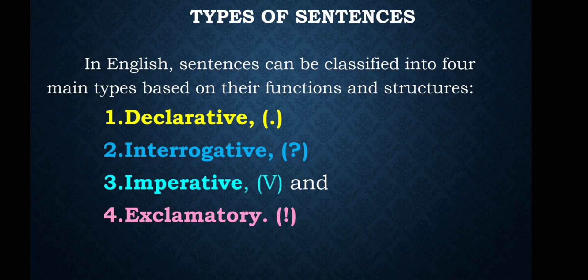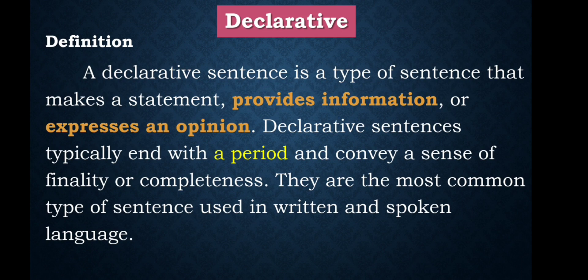A declarative sentence ends with a full stop. A statement that ends with a full stop is called a declarative sentence. An interrogative sentence is the statement which ends with a question mark. An imperative sentence is the statement which begins with a verb. And an exclamatory sentence ends with an exclamation mark. Now let's see the declarative sentence definition.